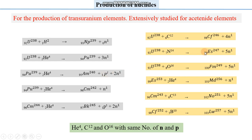Whenever a nucleus undergoes evaporation of neutrons, we need to go back to the neutron-to-proton ratio — specifically how a nucleus establishes the stable neutron-to-proton ratio during nuclear phenomena.